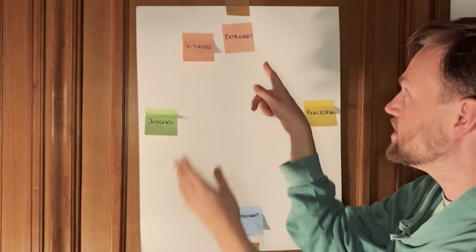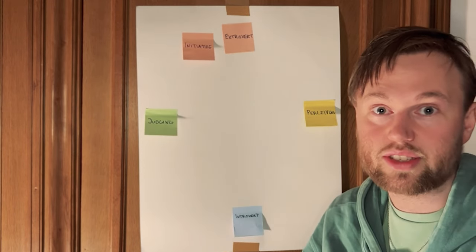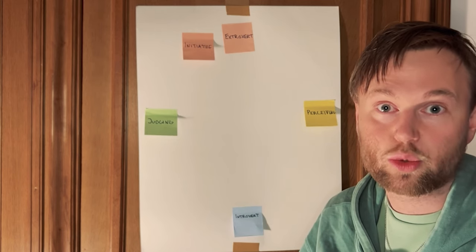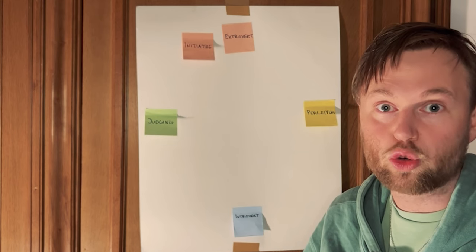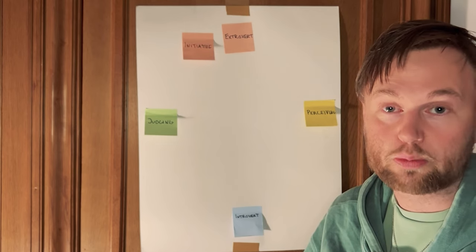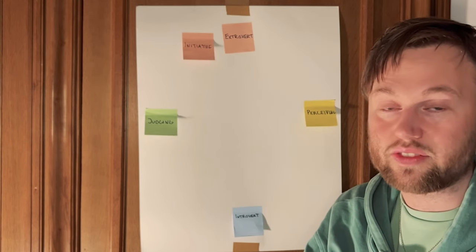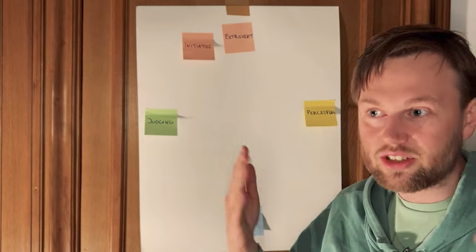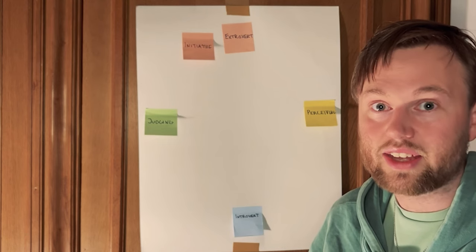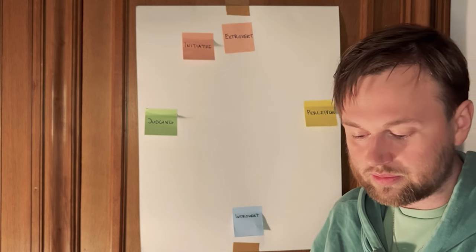The first extroverted trait is initiative — something seen predominantly in extroverts, but also to a high extent in judging personality types. Initiative means wanting to get something done quickly, valuing speed over quality. It can be introducing yourself first at a group event, starting up conversations, or taking the initiative to say 'let's talk about this.' It allows you to be one of the first to do something, exploring and learning new things before anyone else.